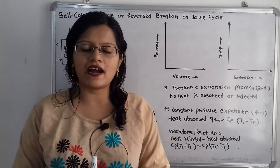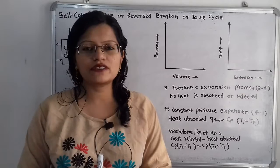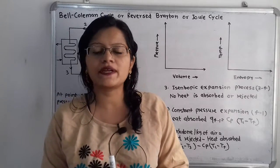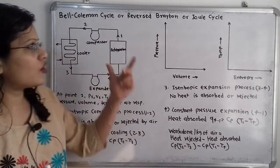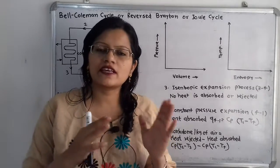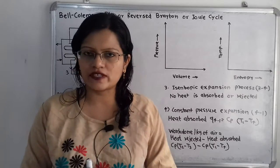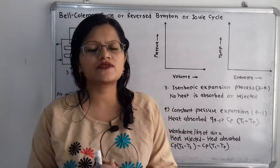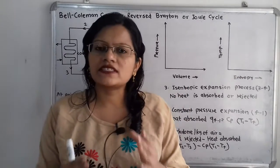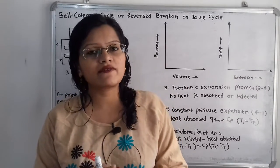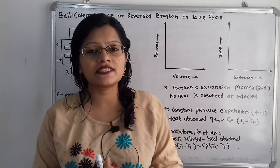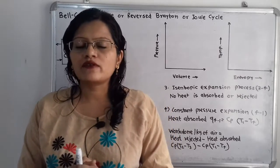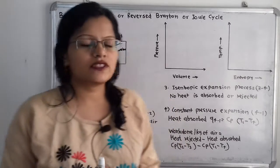Hello friends, this is Priyanka. Today we are going to study how to draw pressure-volume and temperature-entropy diagrams for the Bell-Coleman cycle, also known as the reversed Brayton or Joule cycle. This is a modified form of the reversed Carnot cycle, and in this cycle air is used as the working medium.